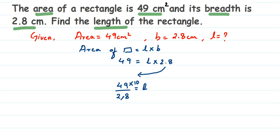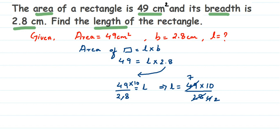So length is equal to 49 multiplied by 10 divided by 28. Now the decimal is removed and I got 28. We can cancel 28 and 49 using the 7 times table: 7 sevens are 49 and 7 fours are 28. We can cancel 4 and 10 using the 2 times table: 2 twos are 4 and 2 fives are 10. Now we are left with the numerator numbers: 7 fives are 35. So we get 35 upon 2.